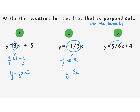One more time. Here is our slope: five over six. We want to find the negative reciprocal — it is positive, so it will become negative six over five. Y equals negative six-fifths x plus 4.